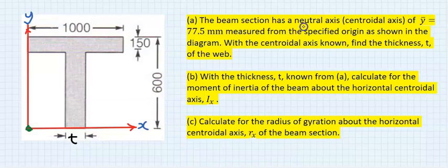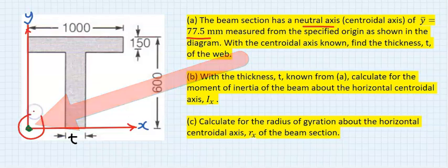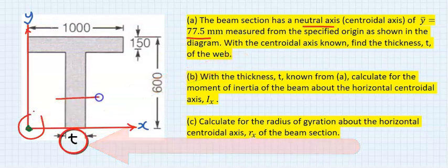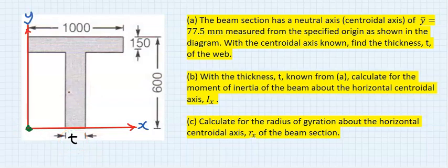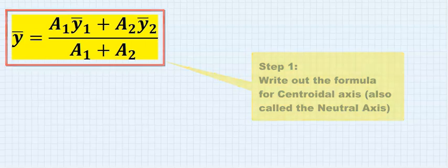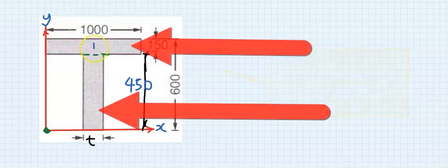The beam section has a neutral axis of 77.5 millimeters measured from the origin. We have to find the thickness of the web. Step number one: write out the formula of the centroid of the T-beam along the y-axis. Step number two: split the beam into two parts.